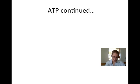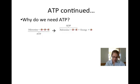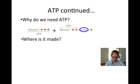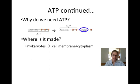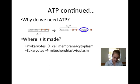Because of its energy storage capacity, ATP is a molecule that is essential to life. Remember that energy is produced when ATP is broken down into ADP and inorganic phosphate. ATP is produced in different places in prokaryotes and in eukaryotes. Because prokaryotes lack mitochondria, they produce ATP in the cell membrane and the cytoplasm, while in eukaryotes, ATP is produced in the mitochondria and the cytoplasm.